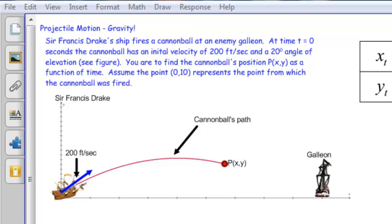Assume the point represents the point from which the cannonball was fired, so not from sea level, but 10 feet up on the deck of Sir Francis Drake's ship. Here we have a situation very similar to linear motion, so we're going to start in the same way.